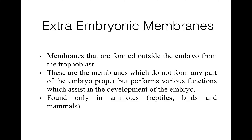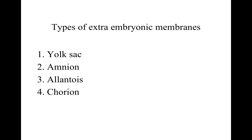These extra embryonic membranes are found only in amniotes, that is reptiles, birds, and mammals. There are mainly four types of extra embryonic membranes: first is yolk sac, second is amnion, third is allantois, and fourth is chorion.